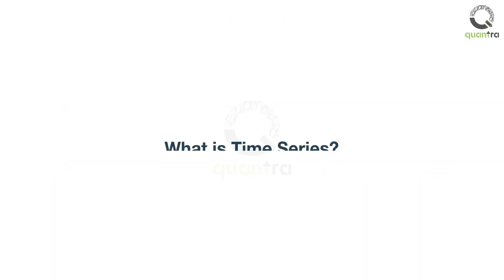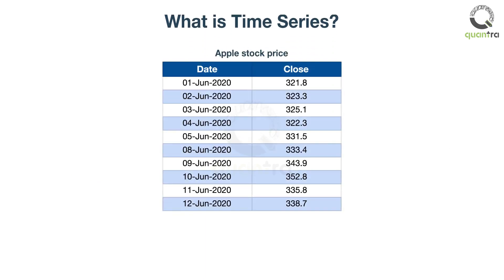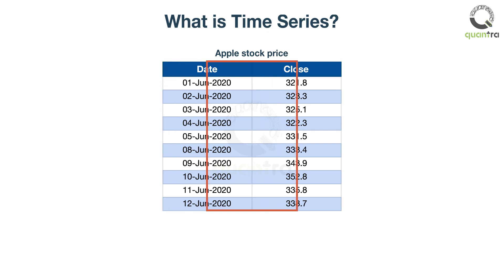What is time series? A perfect example of a time series is the closing price of stocks. This is the daily closing price of Apple stock. One column contains the time element, another column contains the values — in this case, it is the closing price.